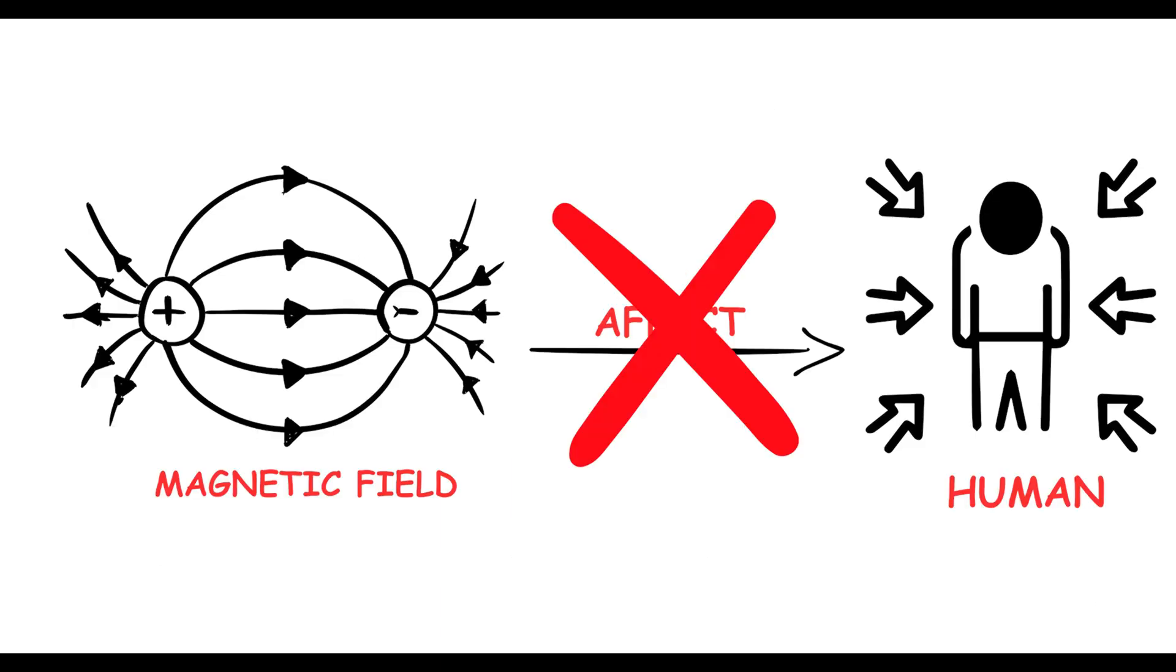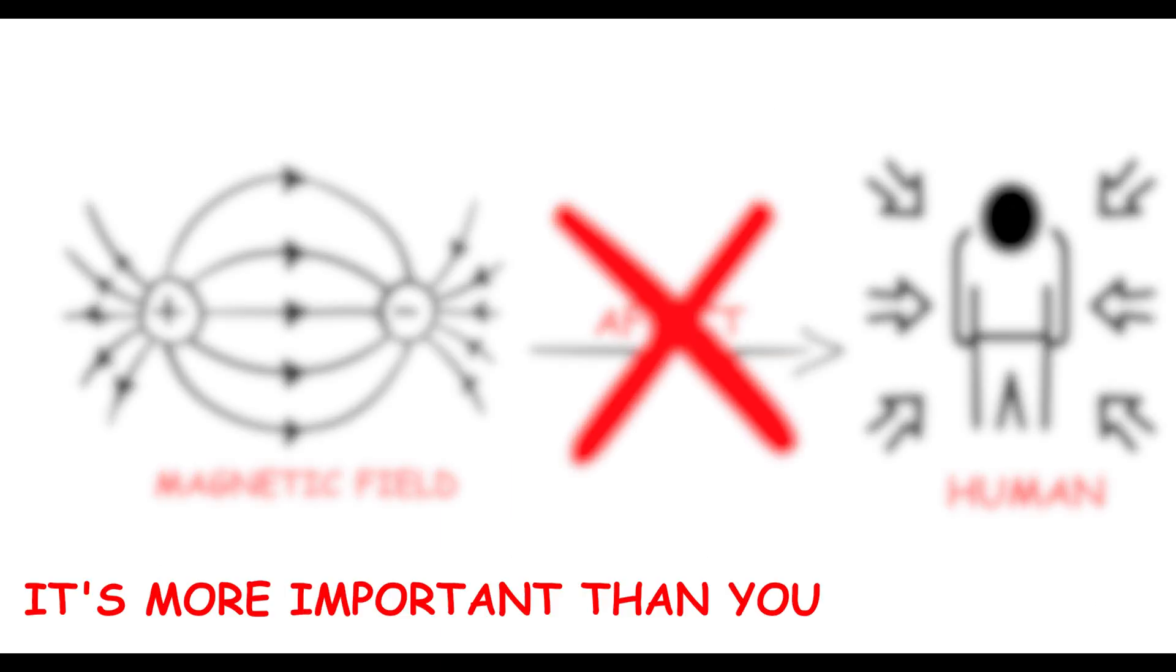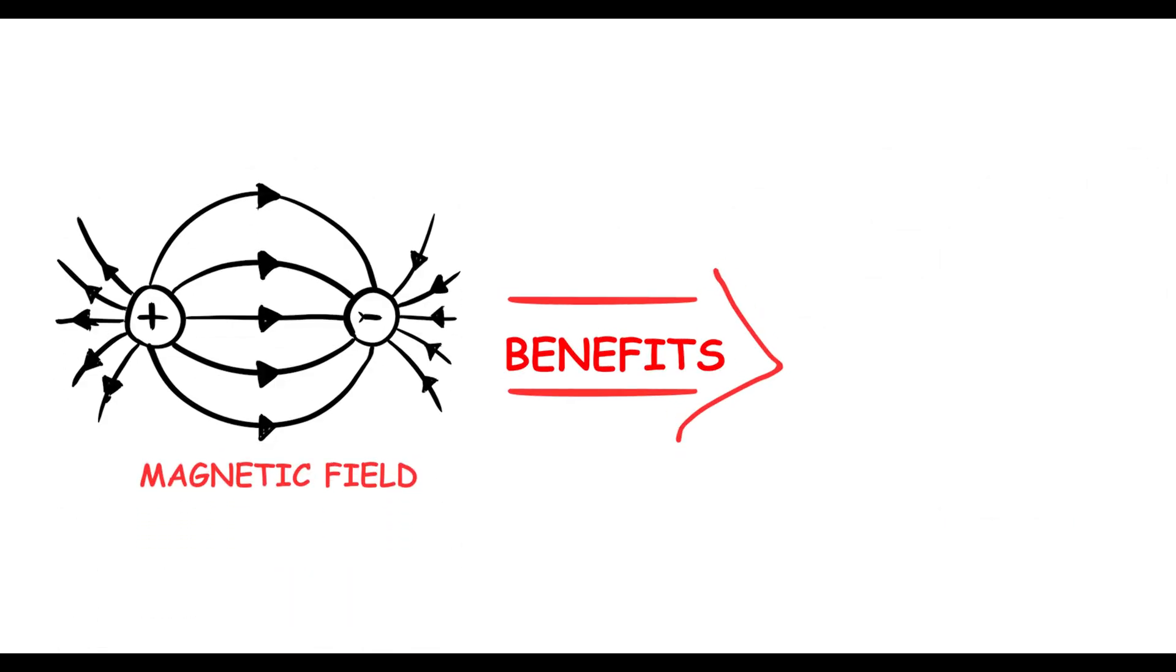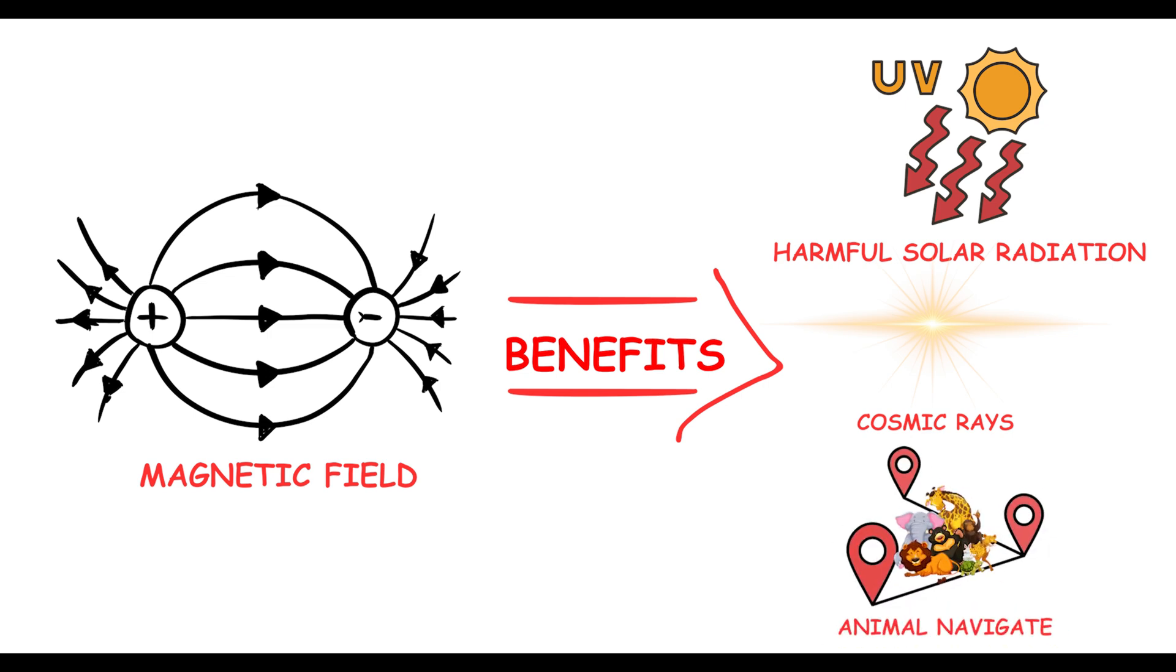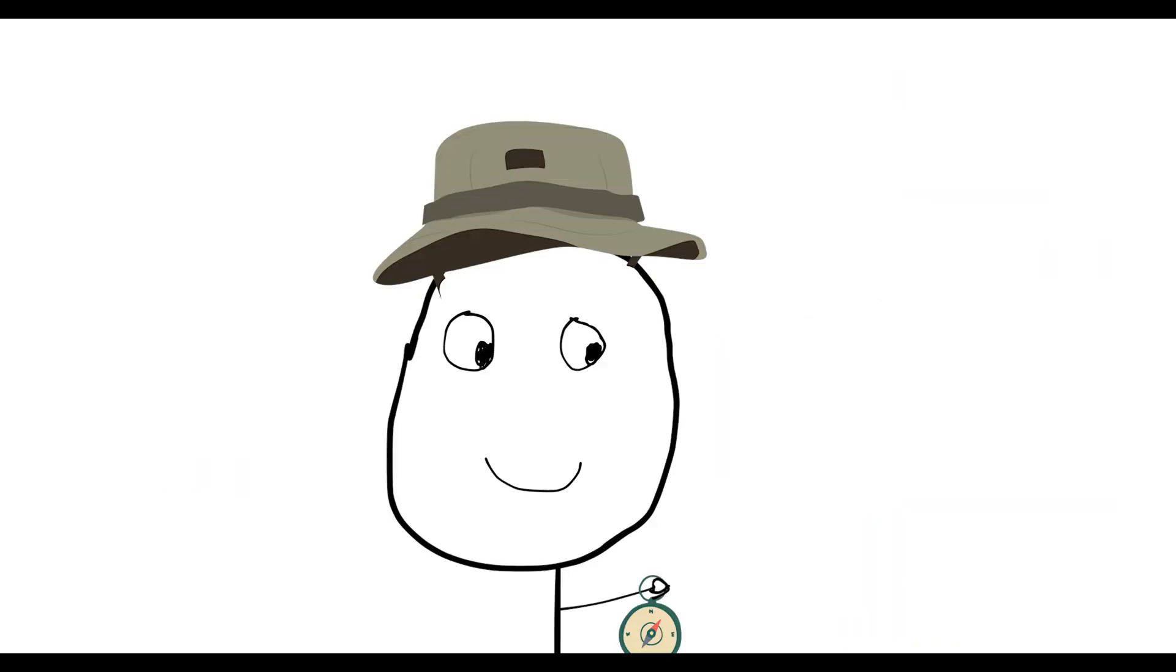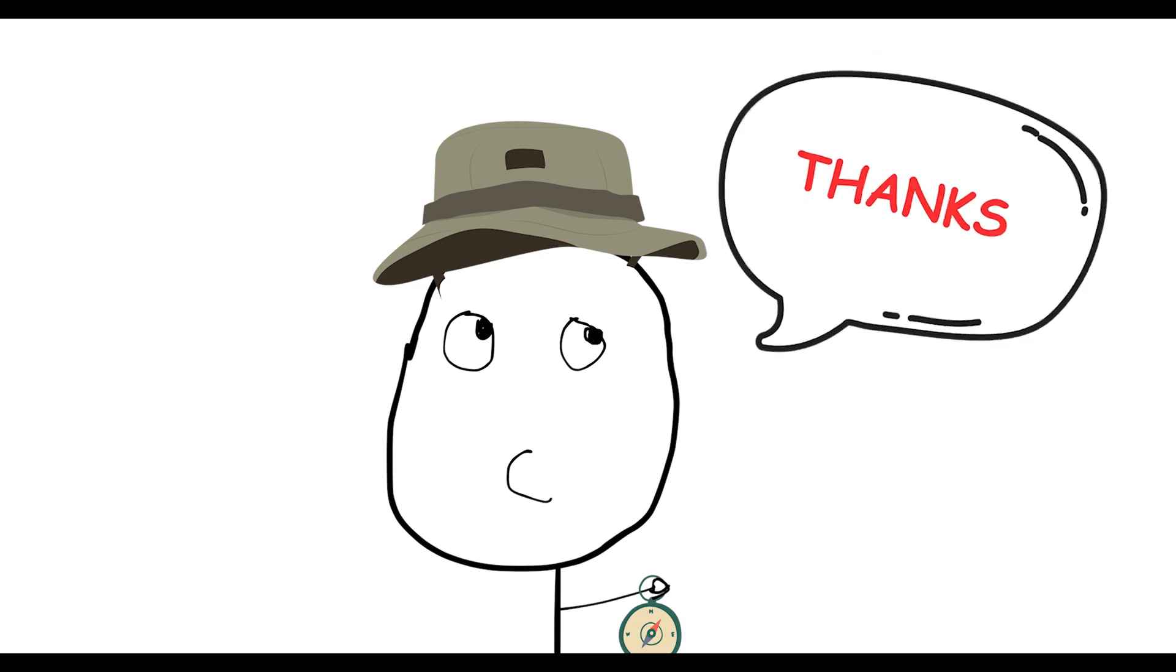Earth's magnetic field doesn't affect us. Think Earth's magnetic field doesn't affect you? It's more important than you might think. Earth's magnetic field protects us from harmful solar radiation and cosmic rays. It also helps animals navigate. Next time you use a compass, thank the Earth's magnetic shield.